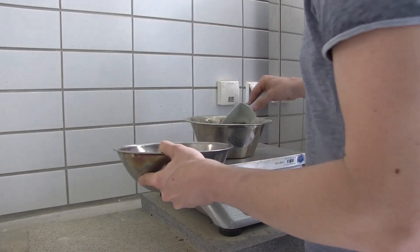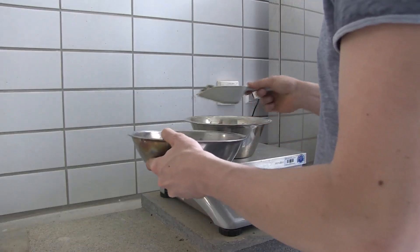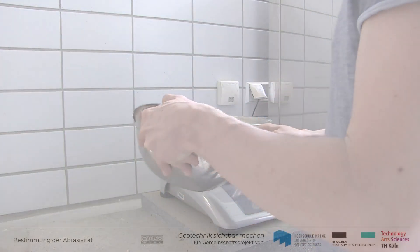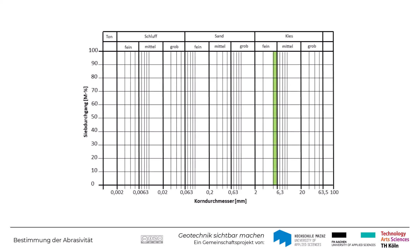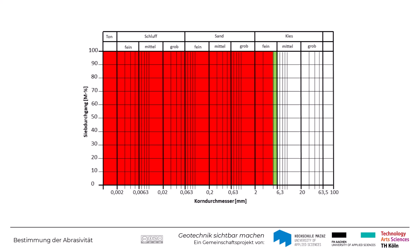Zunächst muss die Bodenprobe vorbereitet werden. Gemäß der französischen Versuchsvorschrift werden für den Versuch aus einer getrockneten Probe 500 g der Korngrößenfraktion von 4 mm bis 6,3 mm genutzt. Bodenkörner mit einem Durchmesser größer 6,3 mm können gebrochen werden und der danach resultierende Anteil mit einer Kornfraktion von 4 mm bis 6,3 mm genutzt werden. Die jeweiligen Korngruppen erhält man durch Trockensieben der Probe.